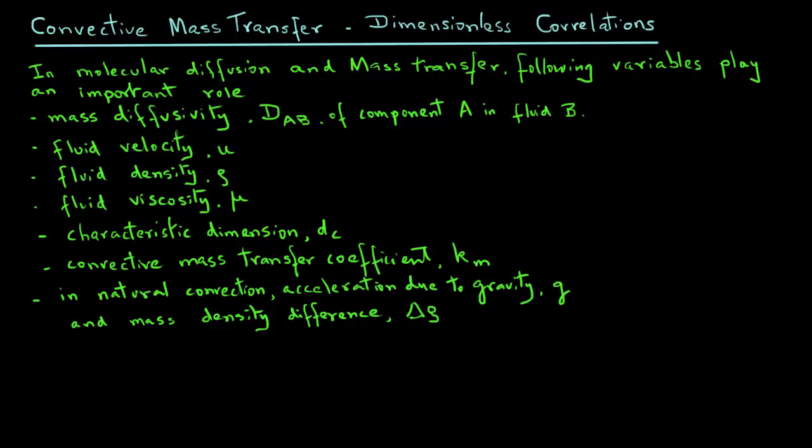We can combine some of these variables into dimensionless numbers, and those numbers then allow us to develop dimensionless correlations for us to find out values for convective mass transfer coefficient.